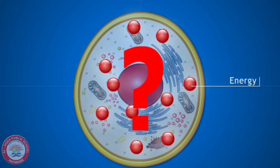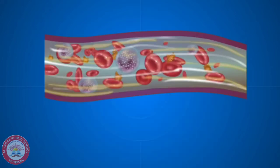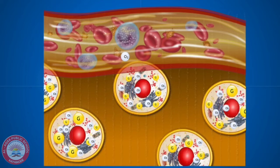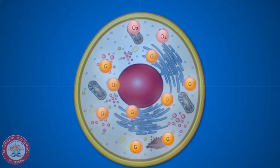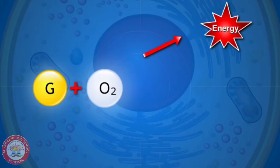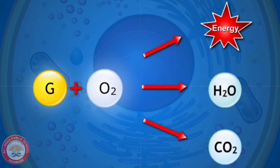Do you know how oxygen reaches each of your cells? It is when we breathe. The oxygen that reaches our lungs is carried by the blood to different cells in our body. Our cells use this oxygen to break down glucose to release energy. In this process, carbon dioxide and water are released.